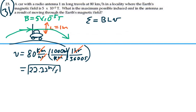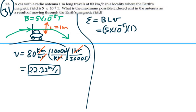So that's the velocity we want to use here. Magnetic field 5 times 10 to the minus 5 Tesla, length 1 meter for the antenna, velocity 22.22 meters per second, and this is equal to...